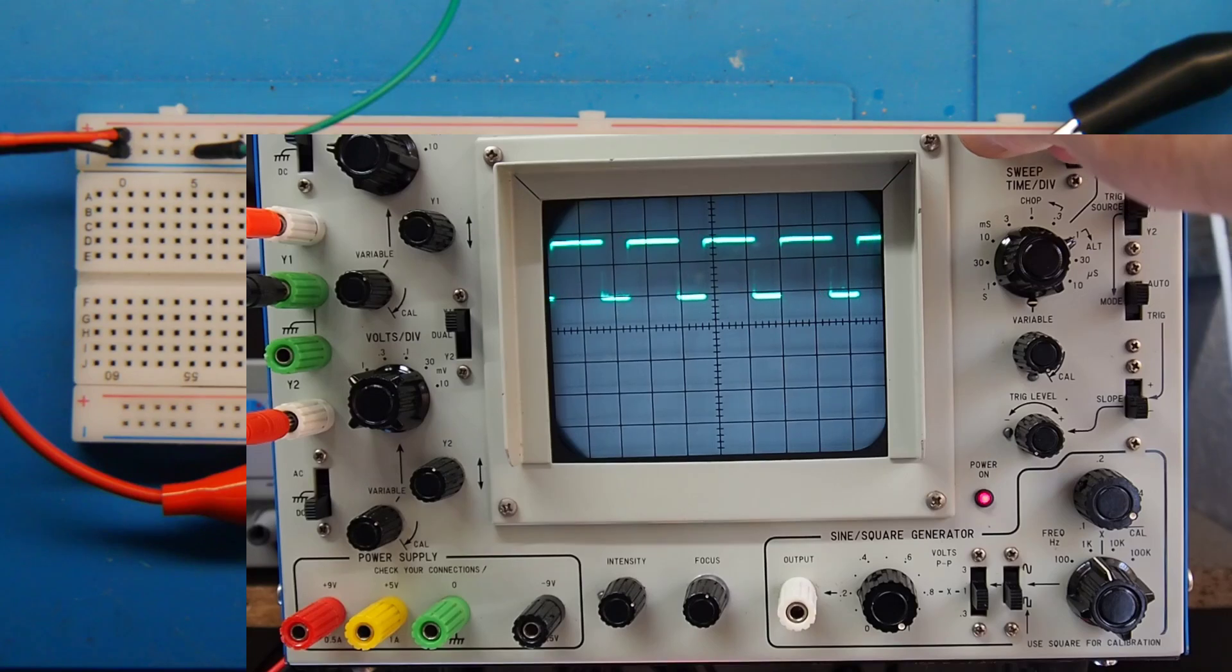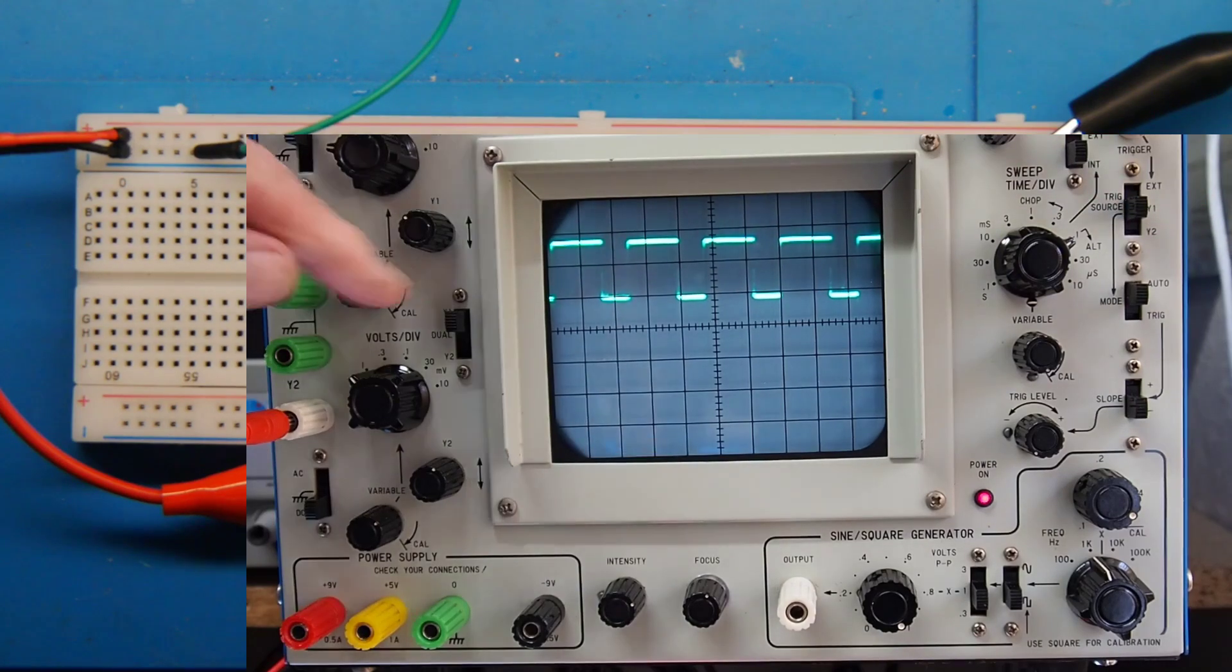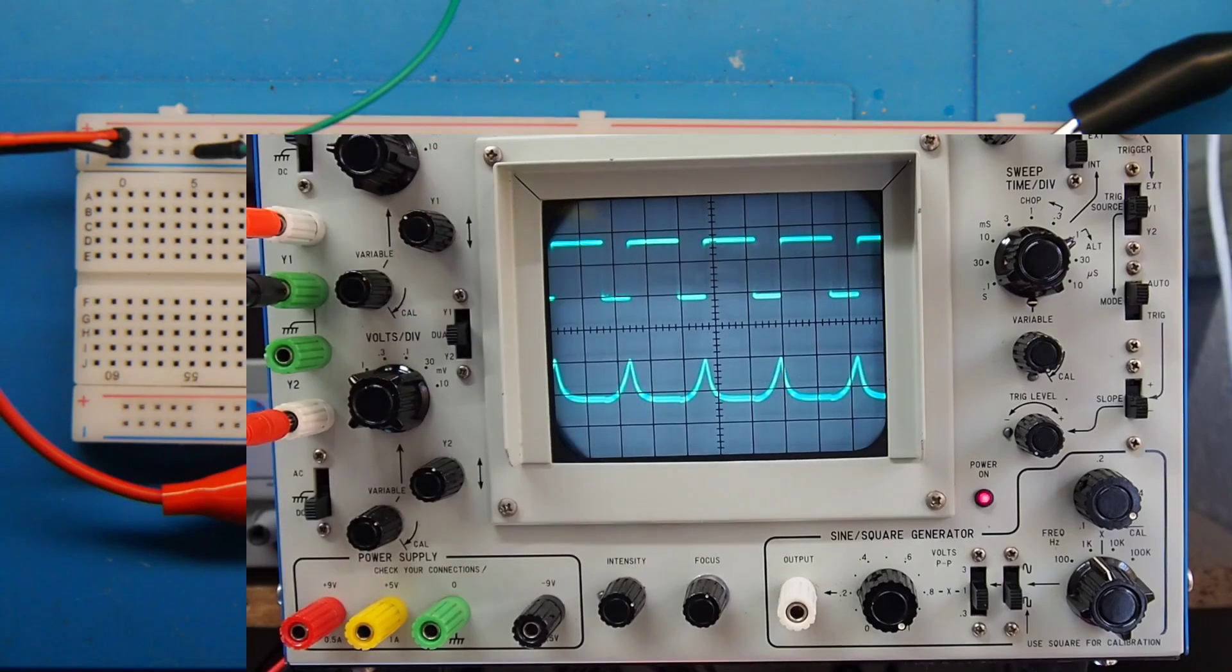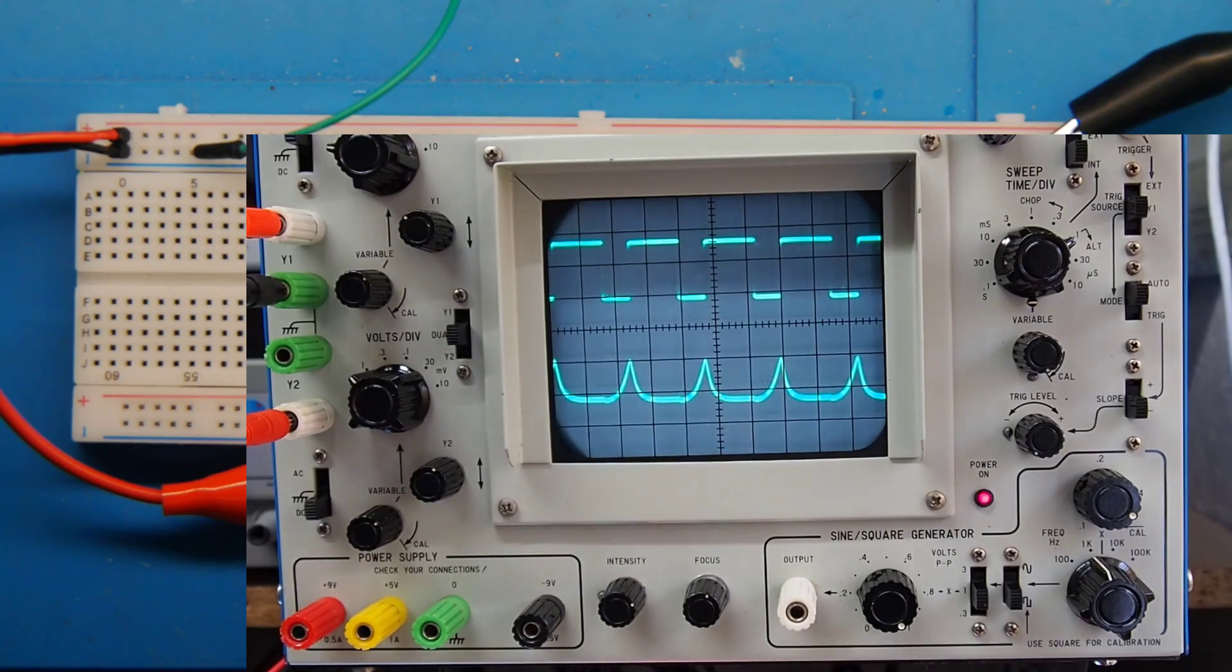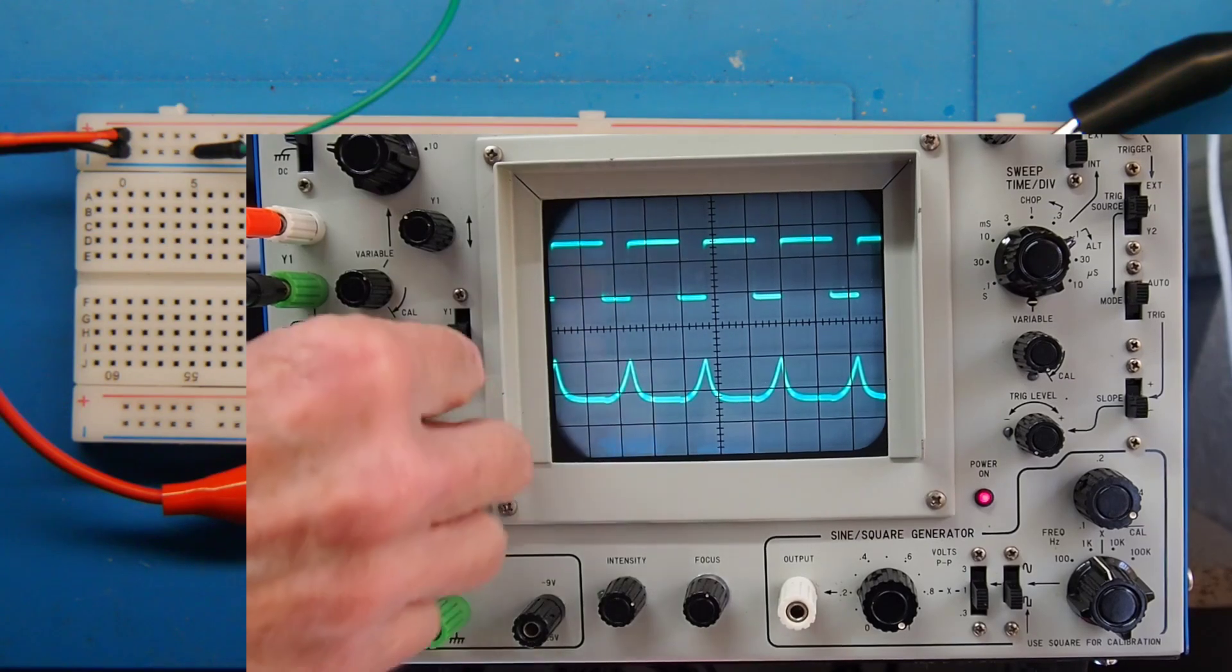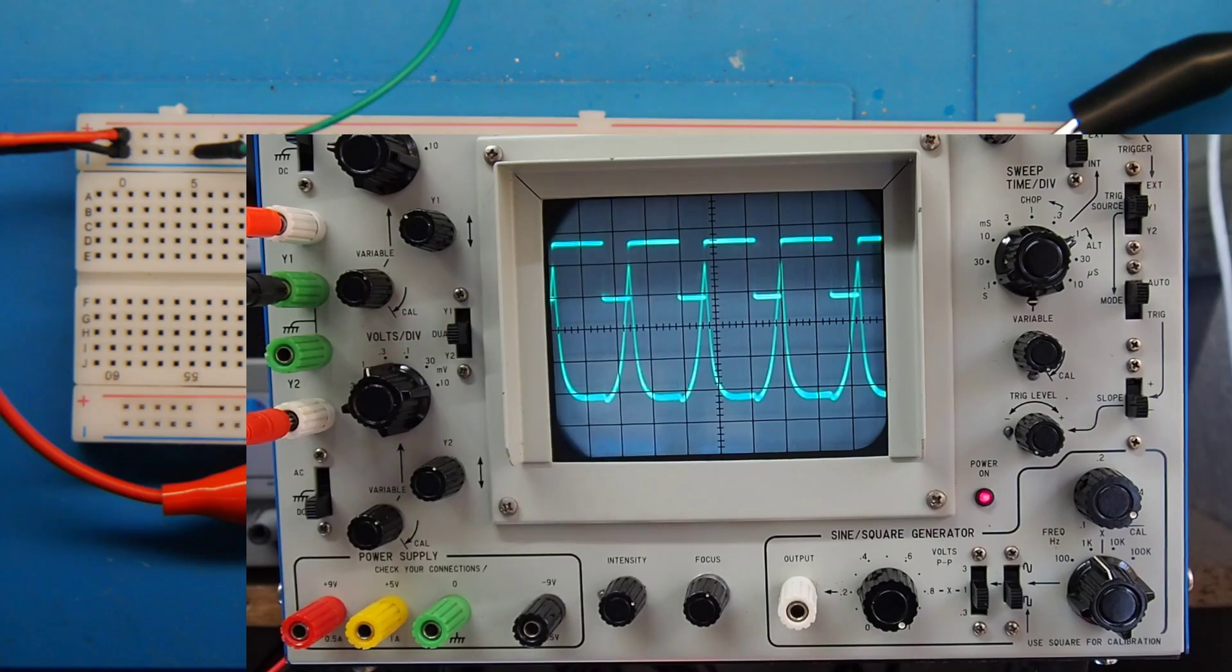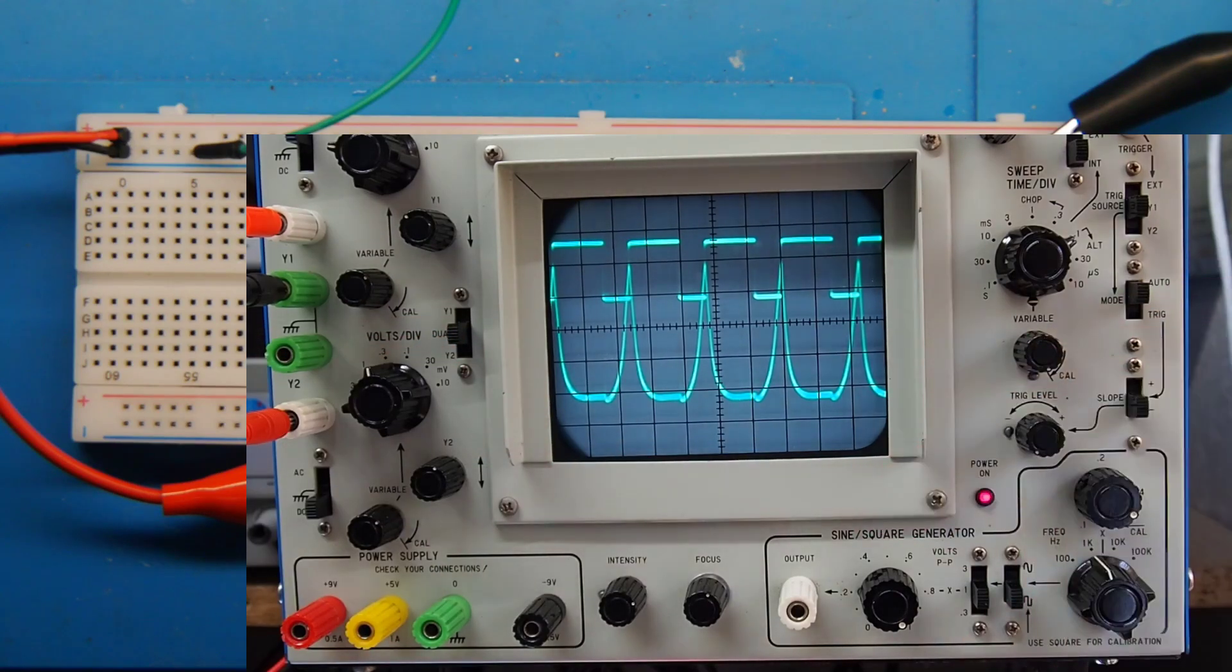So now let's go to dual trace and have a look what's coming out of that third gate. And we can see we have got, well, it's a set of triangular shaped pulses really. And if I up the volts per division you can get an idea of the shape.